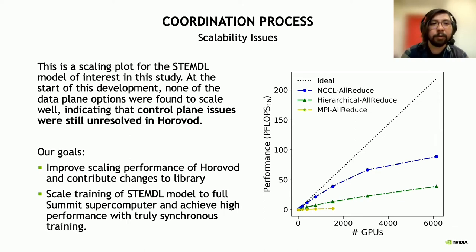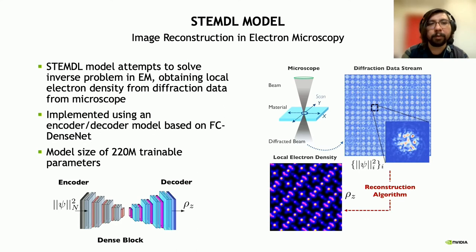That brings us to our goals. First, we wanted to improve the scaling performance of Horovod and contribute those changes back to the upstream library. We also wanted to scale training of the STEMDL model to the full Summit supercomputer and achieve high performance with truly synchronous training. The STEMDL model attempts to solve an inverse problem in electron microscopy, generating local electron densities from diffraction data. The model is implemented using an encoder-decoder architecture based on FC DenseNet, with about 220 million trainable parameters—a fairly large model.